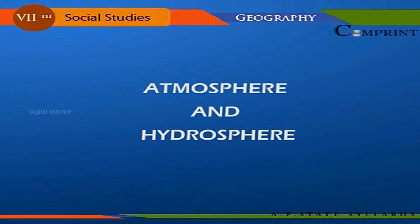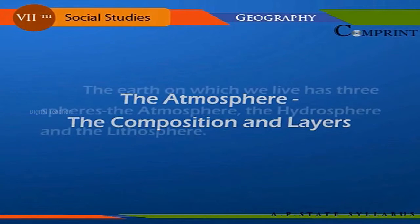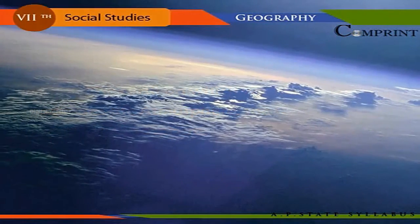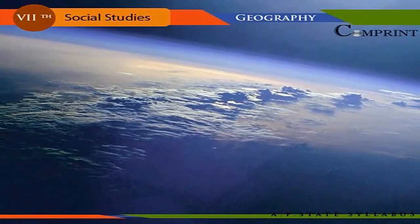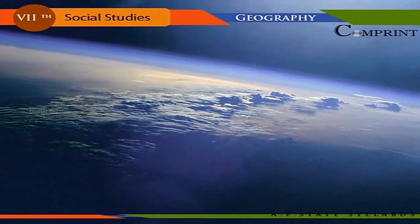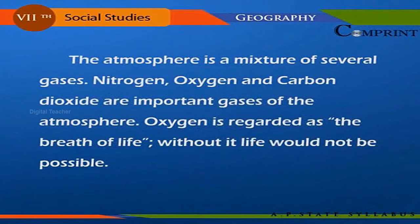The earth on which we live has three spheres: the atmosphere, the hydrosphere, and the lithosphere. The air surrounding the earth is called the atmosphere. It extends several hundred kilometers upwards from the earth's surface. The atmosphere is a mixture of several gases — nitrogen, oxygen, and carbon dioxide are important gases of the atmosphere.